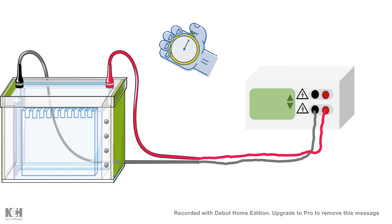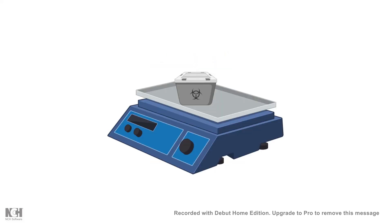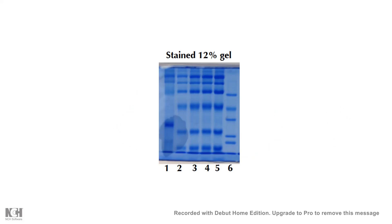Once gel running is complete — which we can tell by the dye front — this is how the unstained gel looks. We can stain the gel by different methods, such as Coomassie Brilliant Blue or silver staining. You stain the gel and compare to known protein markers to check whether your protein of interest is present and whether the resolving has occurred properly. However, to confirm a particular protein of interest in your sample, you need to do a Western blot.